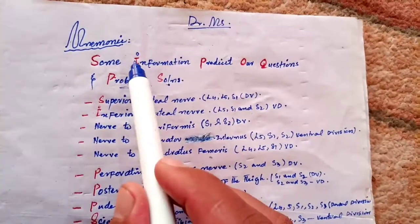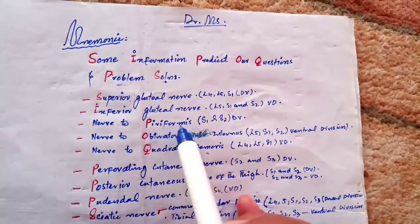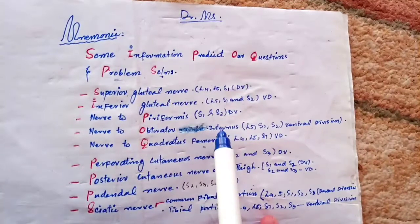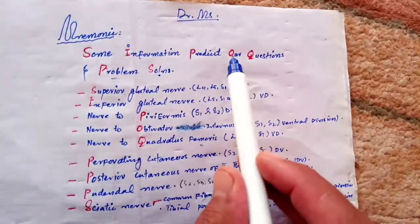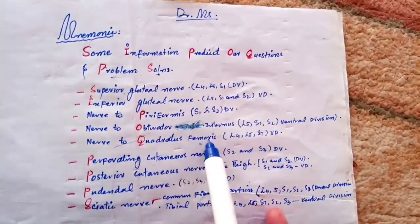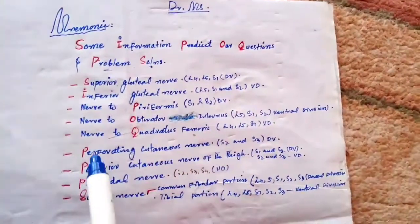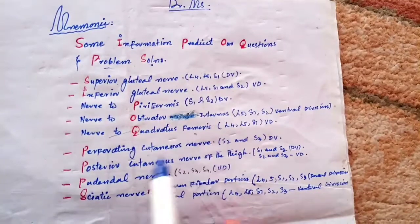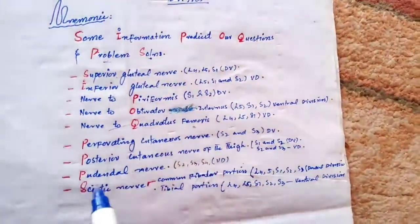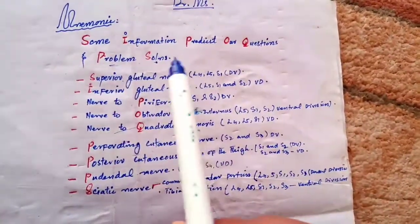In this mnemonic: S stands for the superior gluteal nerve, I for the inferior gluteal nerve, P for the nerve to piriformis muscle, O for the nerve to obturator internus, Q for the nerve to quadratus femoris, P for the posterior cutaneous nerve of the thigh, S for the pudendal nerve, and S for the sciatic nerve. So: Some Information Predicts Our Questions And Problem Solution.